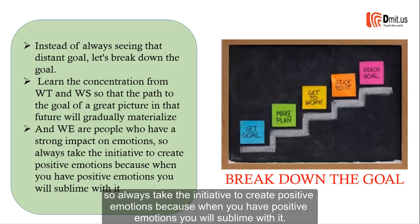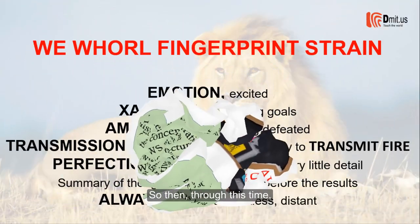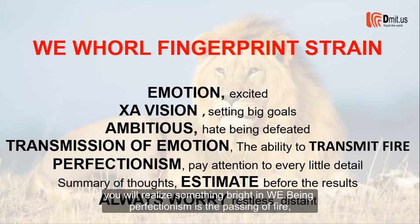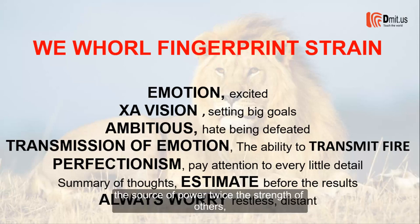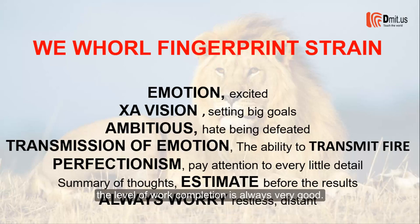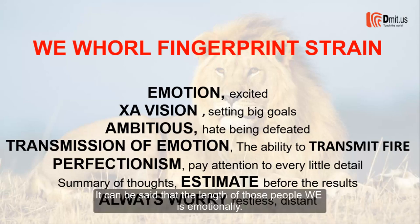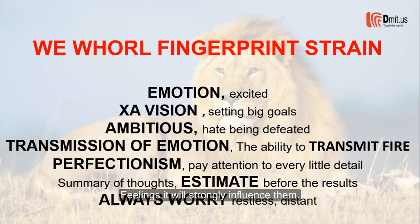WE should learn concentration from WT and WS so that the path to the great future goal will gradually materialize. Since WE people have a strong impact from emotions, they should always take the initiative to create positive emotions — because when they have positive emotions, they will sublimate. Being perfectionist, passing fire, sublimation, and working at twice the strength of others are their qualities, but what will inspire WE to cover it all is emotion.